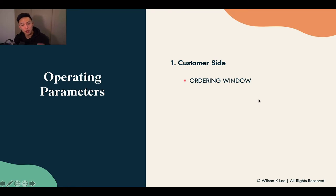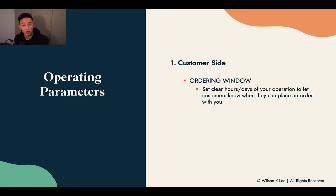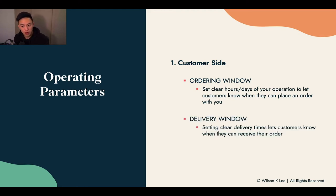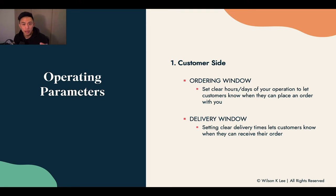From the customer side, we're talking about the ordering window. That means that you are setting up clear hours and clear days of your operations to let your customers know when they can place an order with you. And the delivery window — you're setting a clear time of delivery for your customers of when they should be receiving their orders. We're going to dive into a clear example later on in this lesson. Just understand there is a precise ordering window and a precise delivery window for your customers.